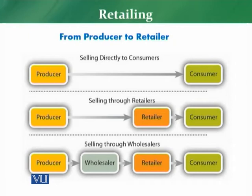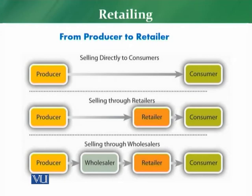In many cases you will observe there are scenarios where the producer, wholesaler, and retailer are all involved, with a distributor also acting as an intermediary. In that scenario, the chain is: producer sells to distributor, distributor sells to wholesaler, wholesaler sells to retailer, and the retailer sells the product to the end consumer.